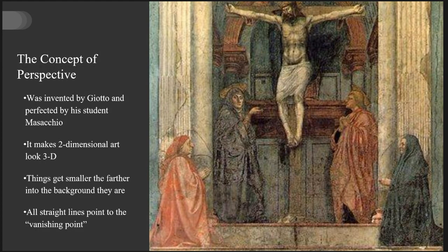We have the concept of perspective. It's invented by Giotto and perfected by his student, Masaccio. One of the things that — maybe you've tried this before — my biggest difficulty was trying to figure out how to make 2D figures on flat paper look 3D. Well, the way that's done is through perspective. Basically, things become smaller the further they are into the background, and all straight lines point to a vanishing point.